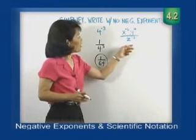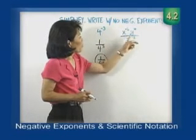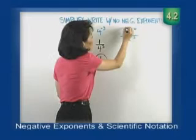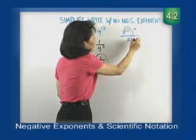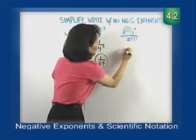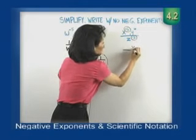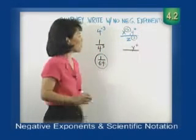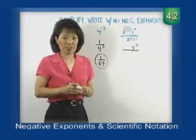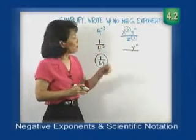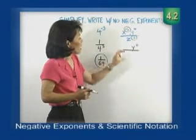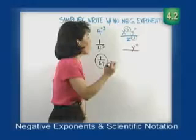Let's look at our last one. We have x to the negative sixth, y to the fourth, all over z to the negative two. Now we have two negative exponents — this one in the numerator and this one in the denominator. The y to the fourth has a positive exponent, so it's okay as is. We'll leave it in the numerator. What we have to do is handle the x to the negative six and z to the negative two.